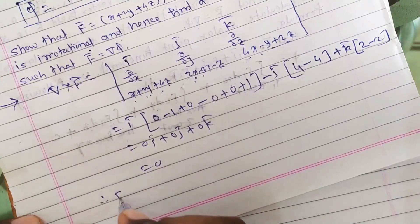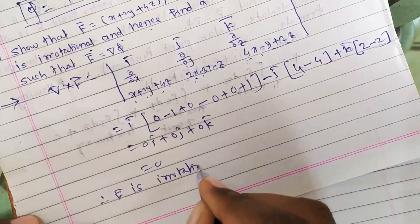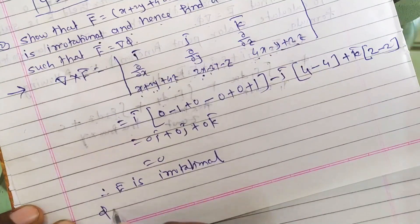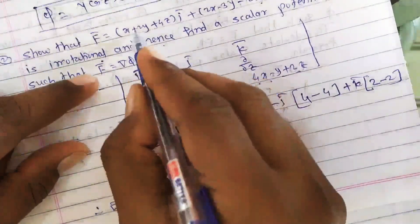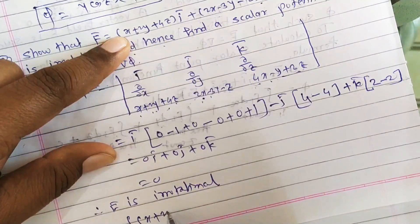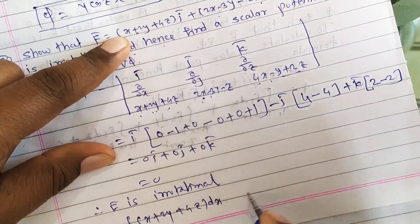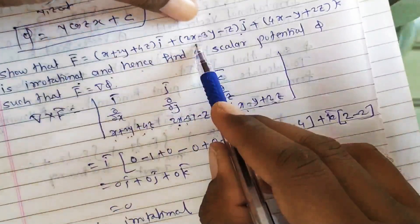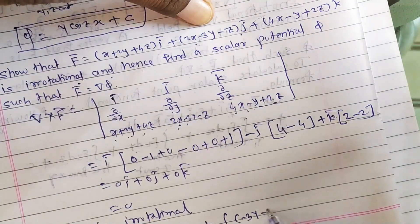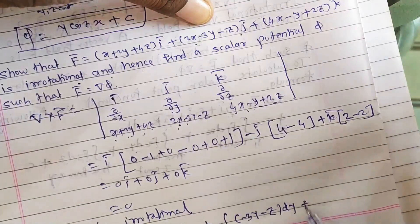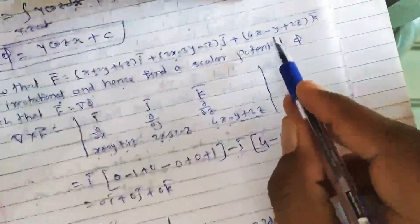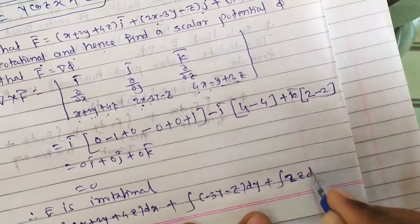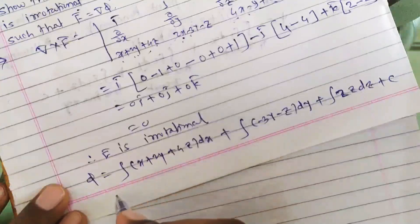So ∇ × F̄ = 0, therefore F̄ is irrotational. Now find scalar potential φ: φ = ∫(x + 2y + 4z) dx + ∫(terms of f₂ free from x) dy + ∫(terms of f₃ free from x and y) dz + C. Terms of f₂ = (2x − 3y − z) free from x: −3y − z. Terms of f₃ = (4x − y + 2z) free from x and y: 2z.